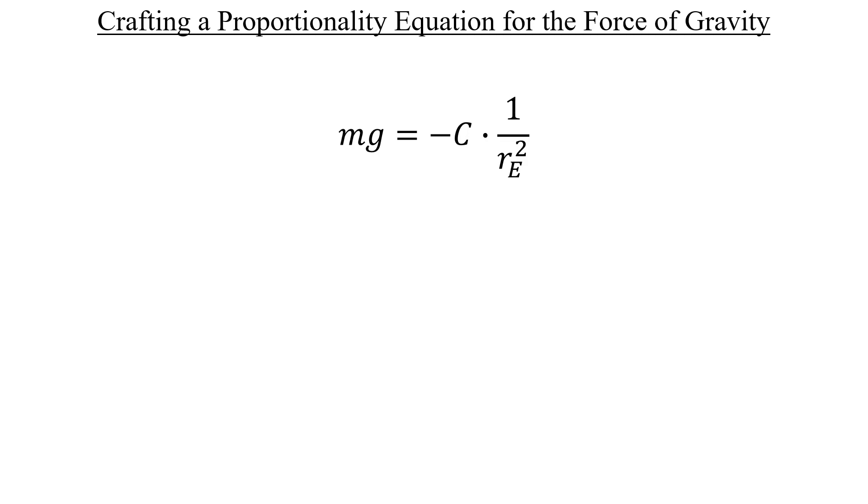If we multiply both sides by the square of the radius of the Earth, as well as negative 1, we can isolate that constant and see exactly what it's equal to. That is what we need to plug into our previous equation. And with that ready, we can use our work and energy concepts to solve the problem.